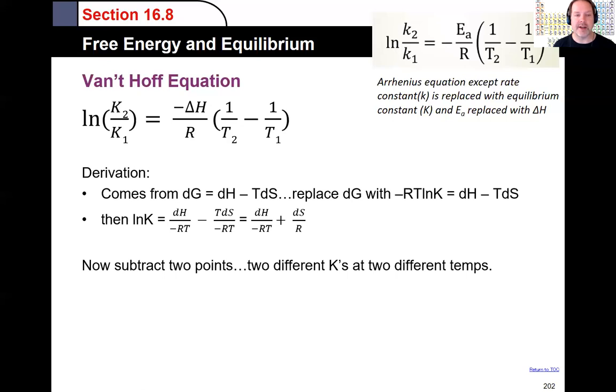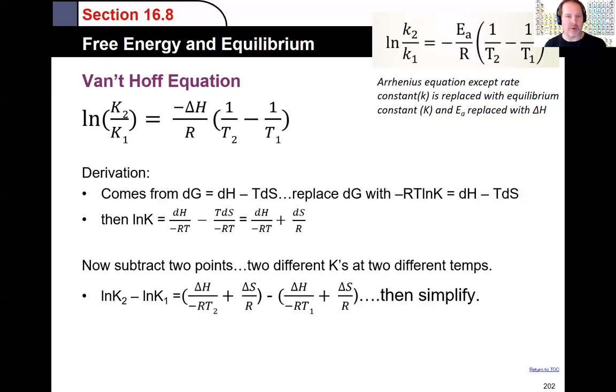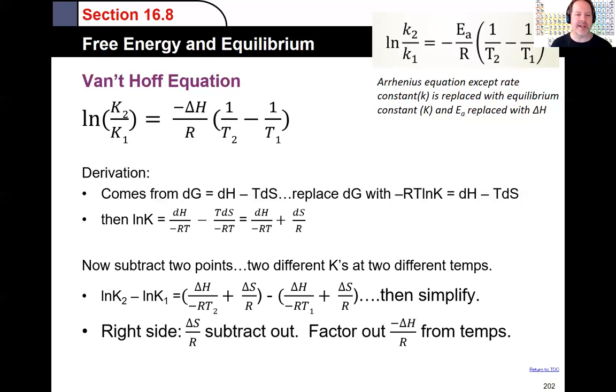And then you can make the substitution and divide both sides by minus RT and simplify from there. Where the van't Hoff comes from is taking two of these points and subtracting them. You don't need to derive it so it's not that critical but for some it helps to see where it came from and how it all works out.